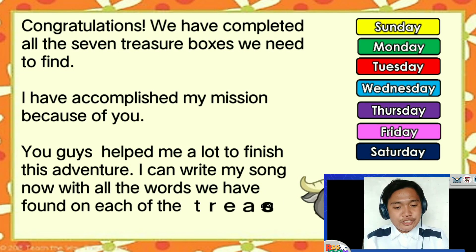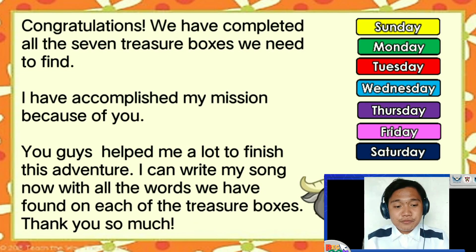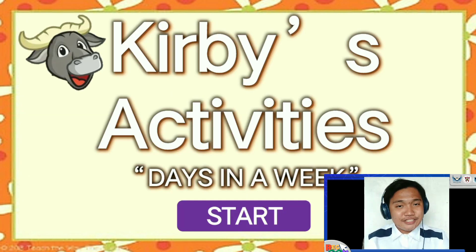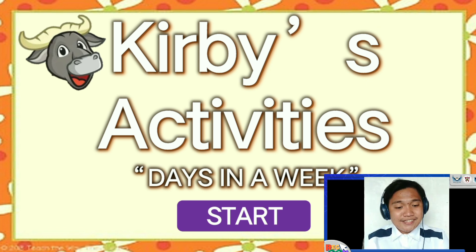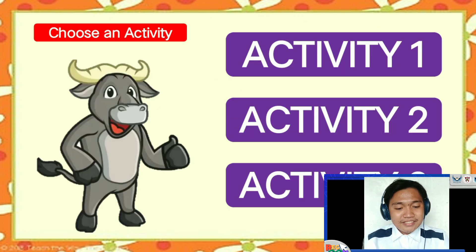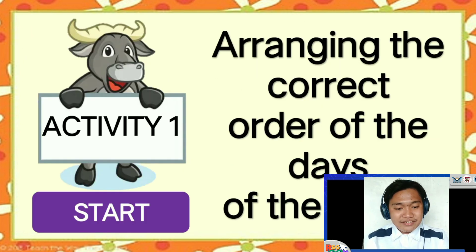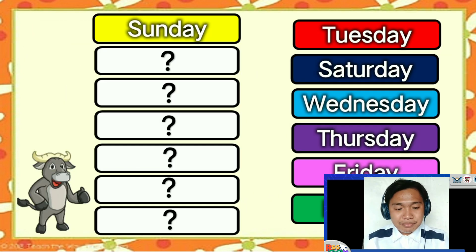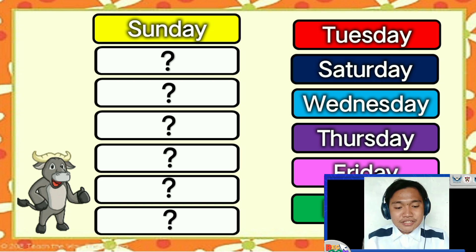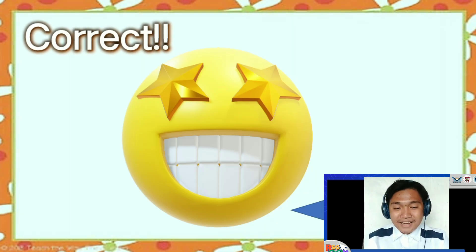After the adventure of Kirby, pupils will be directed to three interactive activities. Activity 1 requires pupils to arrange the days of the week by clicking the correct day next to the given day. For example, the day that comes after Sunday would be Monday.